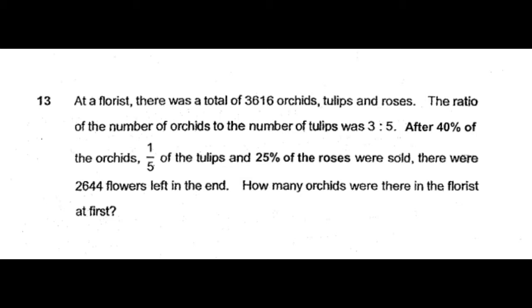At a florist there was a total of 3616 orchids, tulips and roses. The ratio of the number of orchids to the number of tulips was 3 to 5. After 40% of the orchids, one-fifth of the tulips and 25% of the roses were sold, there were 2644 flowers left in the end. How many orchids were there in the florist at first?